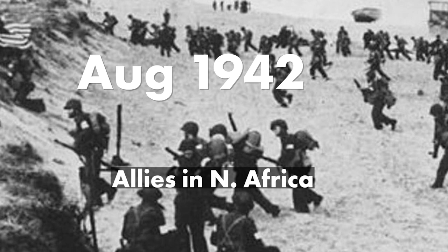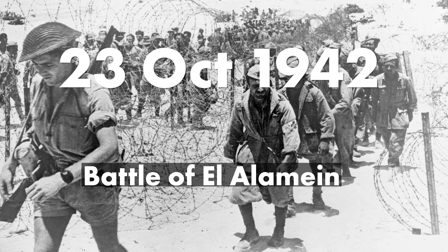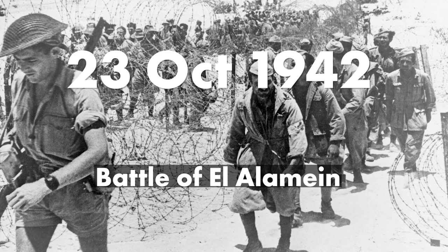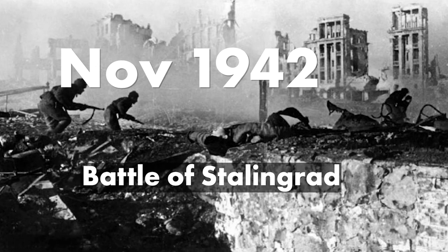On the 23rd of October 1942, we have the Battle of El Alamein. Montgomery attacked the German-Italian army in North Africa with a massive bombardment followed by an armored attack, then proceeded to chase the routed enemy some 1,500 miles across the desert. In November 1942, the Russians won their first victory against Germany at the Battle of Stalingrad.